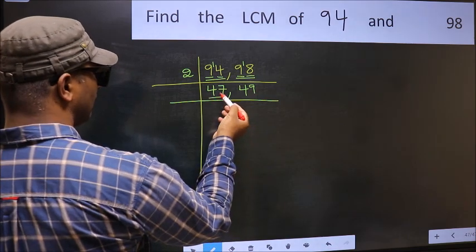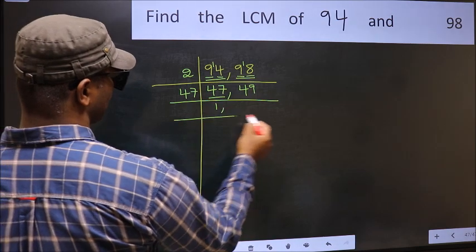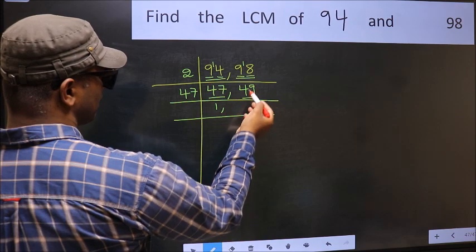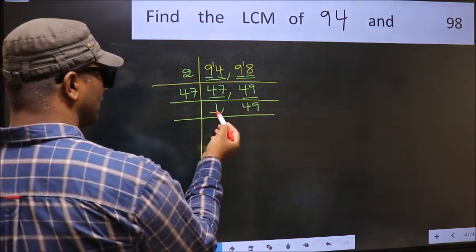Now here we have 47. 47 is the prime number. So 47, 1 is 47. The other number 49, not divisible by 47. So you write it down as it is. Now we got 1 here.